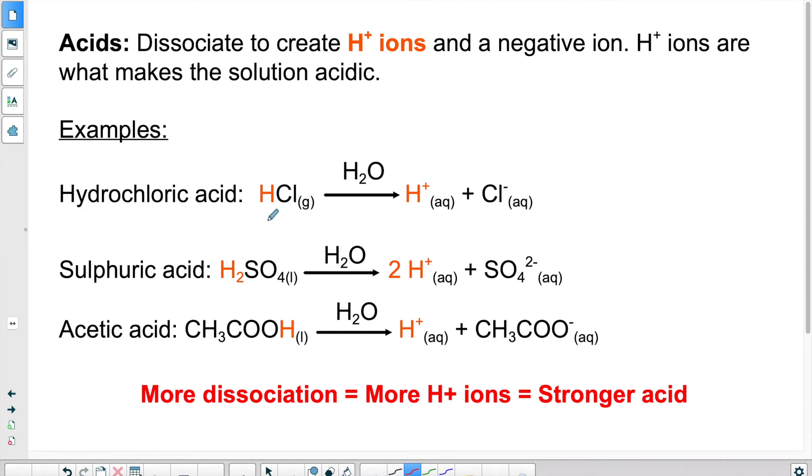So if we look here at the first example, we have HCl. So HCl will dissociate into H plus and Cl minus.